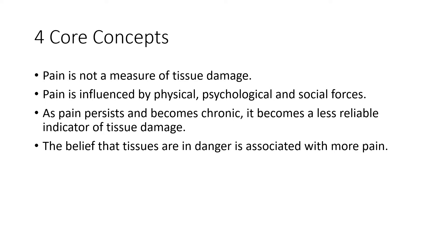Tissues tend to heal — most injuries that occur in the body heal within three or four months. Typically with chronic pain, the injury is healed, but what's broken is the pain delivery mechanism in the nervous system. It should have turned off when the tissues healed, but that doesn't always happen. This overactive pain signaling is a huge component of chronic pain, so our task becomes: how do we quiet down the pain?